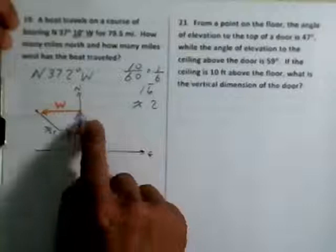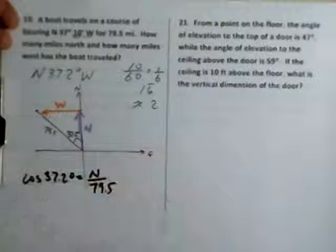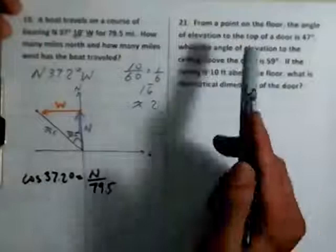Oh, 15 minutes. I have to teach pretty soon. Anyways. So since I have the hypotenuse, I'm looking for the adjacent side. I can use cosine. I'll help you do a setup for this one. Cosine of 37.2 degrees equals n over 79.5. And you're looking for n. And you can do the same thing with the direction for west.